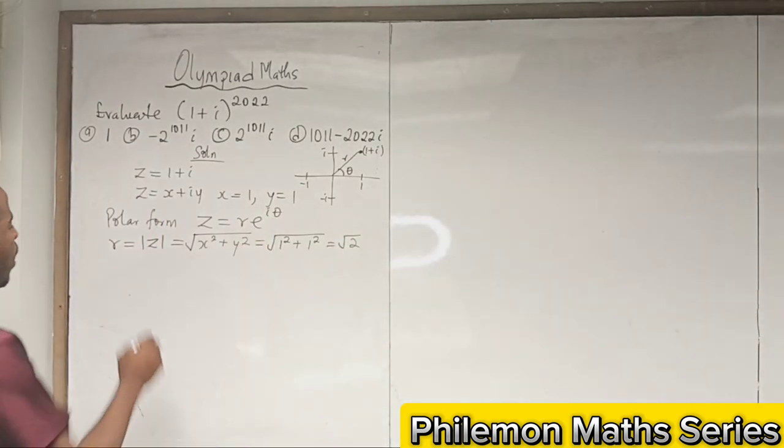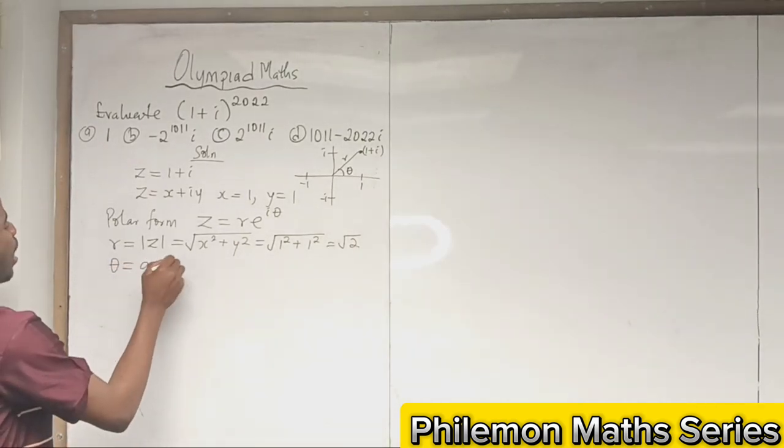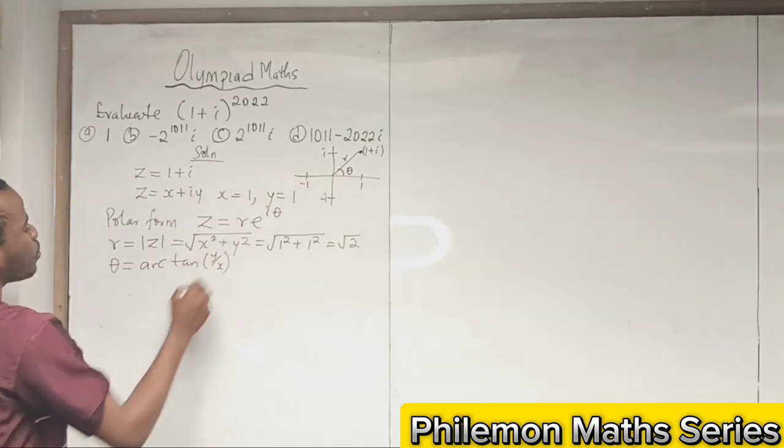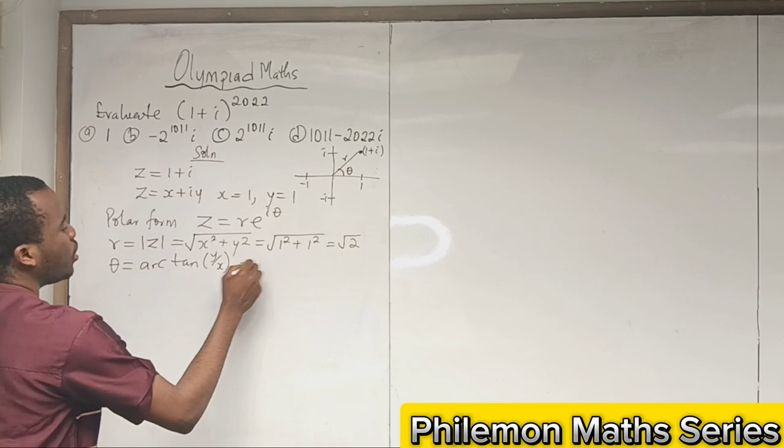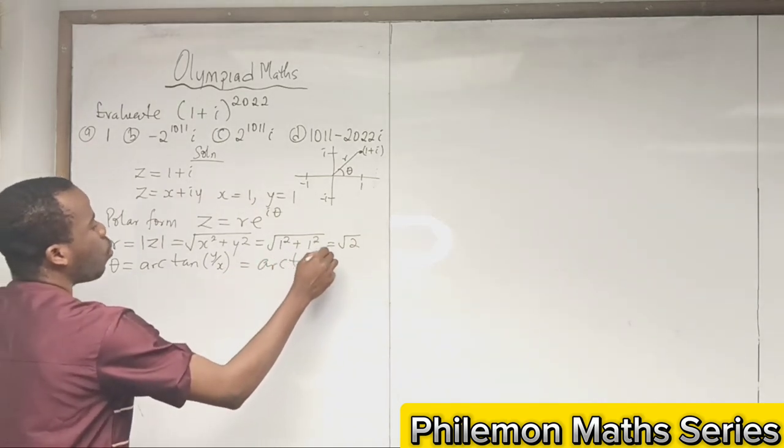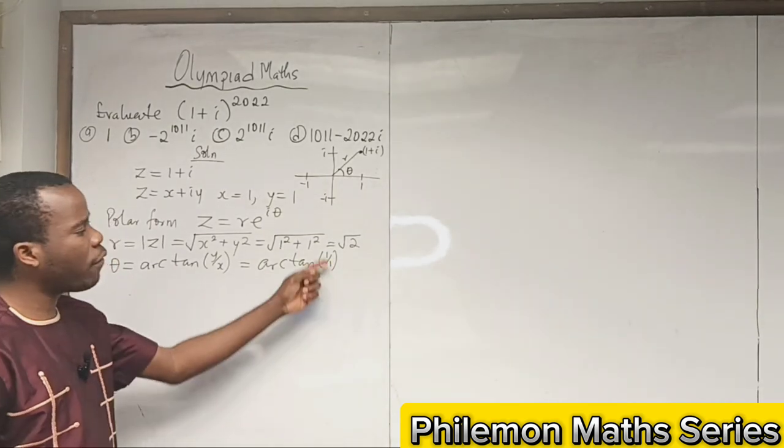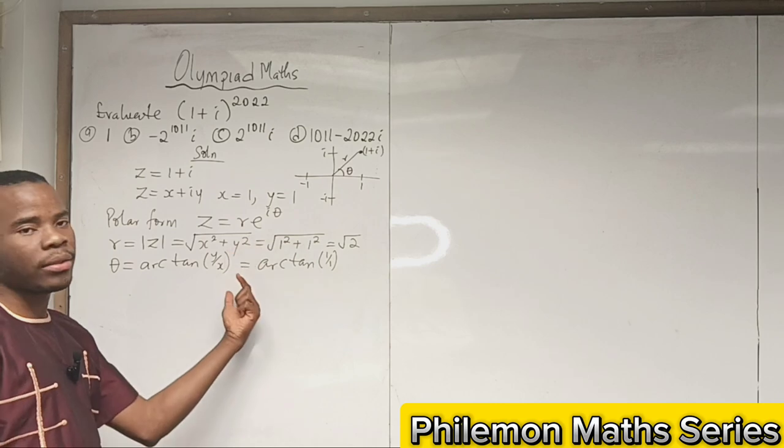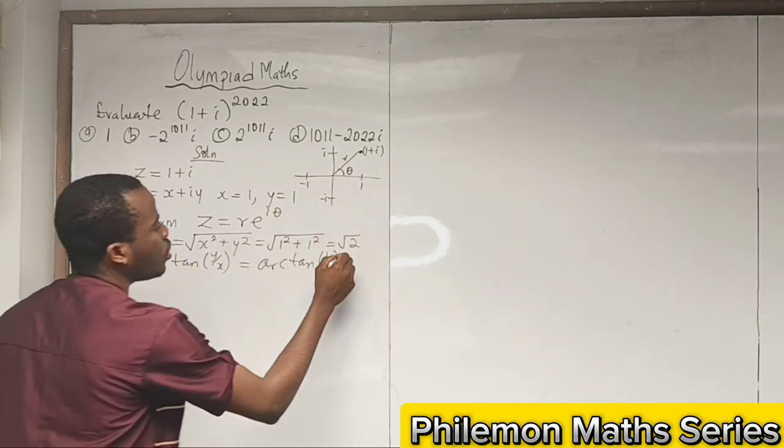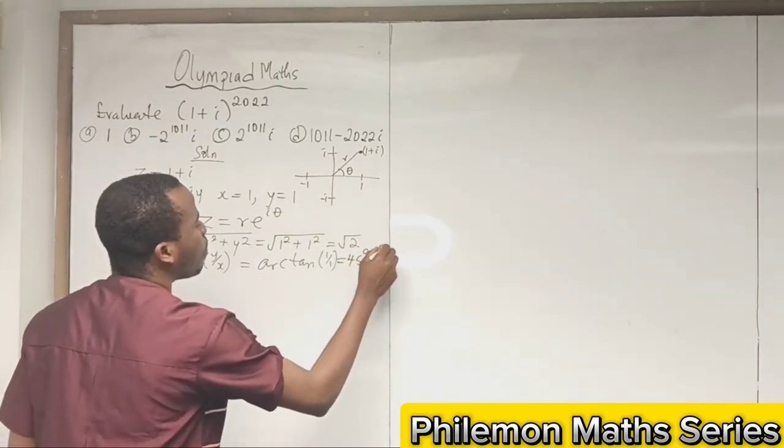How do we get theta? Theta is the principal argument and is given as arctan(y/x), which is arctan(1/1). Arctan of 1 is 45° because tan 45° is 1. It is 45° because we are in the first quadrant, so this is 45 degrees, and in radians it is π/4.